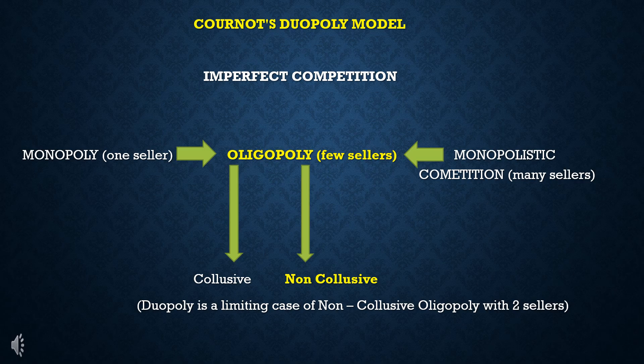Oligopoly can be classified as Collusive Oligopoly and Non-Collusive Oligopoly. Collusive Oligopoly means the firms in the market cooperate, but they act together secretly or illegally to achieve something. Because it involves secret and illegal cooperation, it is called Collusive Oligopoly.